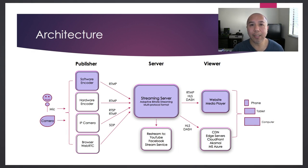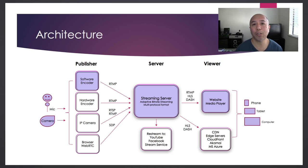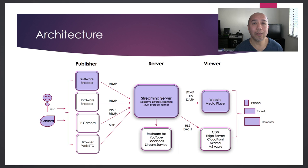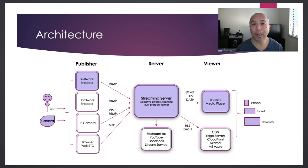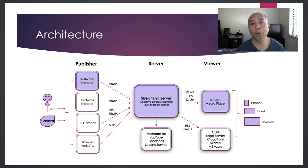On the publishing side, you have a live event — whether it's a speaker or a sports event — and you want to capture it. You have a camera and some kind of audio source, such as a microphone connected to a mixer or through the house audio system. You capture that using some kind of encoder. The encoder could be a software encoder running on a desktop, a hardware encoder, an IP camera, or a browser in the case of WebRTC.